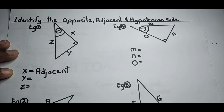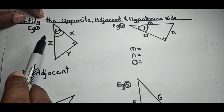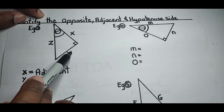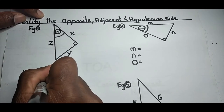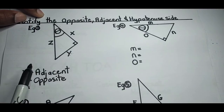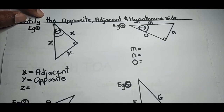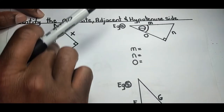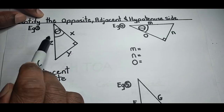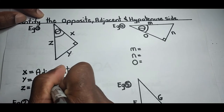Y represents the opposite side — the side that is opposite to the given angle theta. Z is the hypotenuse — the only remaining side, which is always the longest side or the side opposite to the right angle. That completes example one.